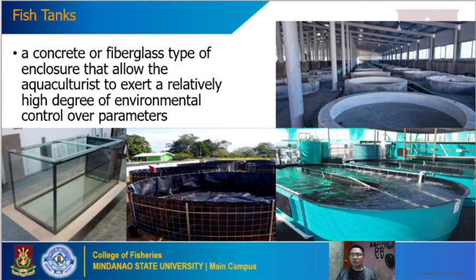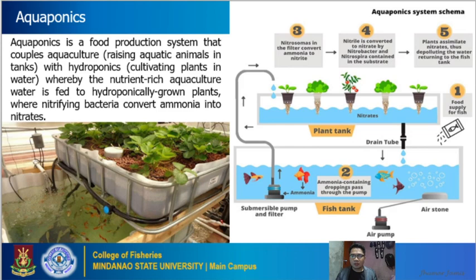Next is aquaponics. Aquaponics is a food production system that couples aquaculture — raising aquatic animals in tanks — with hydroponics, or cultivating plants in water. The nutrient-rich aquaculture water is fed to the hydroponically grown plants, where nitrifying bacteria convert ammonia into nitrates to make it available for plants. Looking at the schematic diagram: food is given to the aquatic organisms, which excrete ammonia-containing droppings.